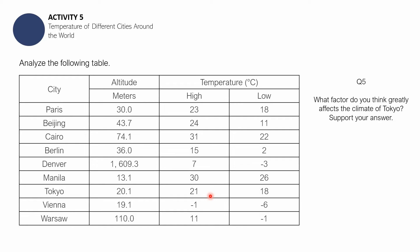If you have decided to continue, let's proceed with question number 6. I think this is the last question in this activity. How does the elevation of Paris affect its climate? The elevation of Paris is 30 meters above sea level, it has an average high of 23 degrees Celsius and an average low of 18 degrees Celsius.